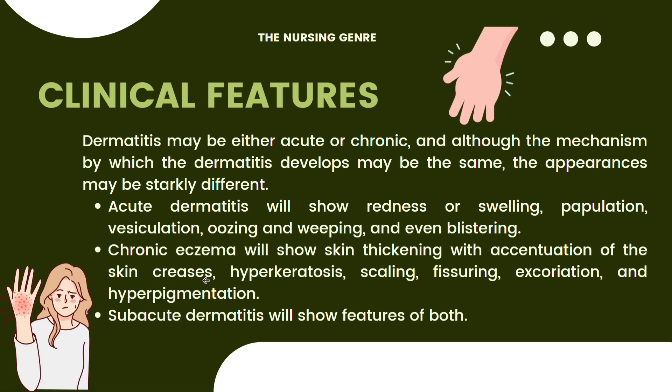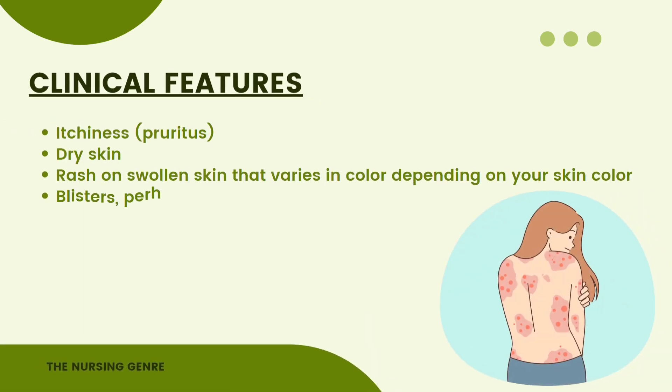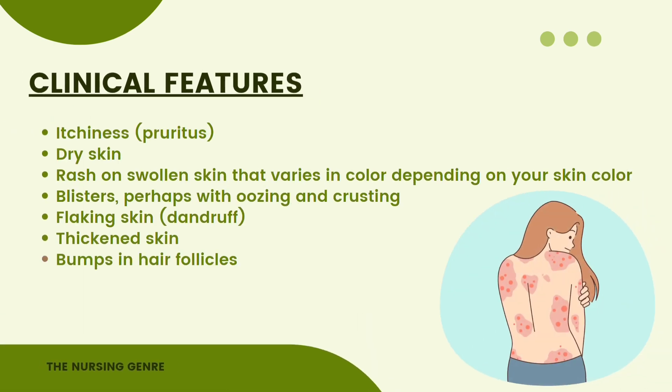Subacute dermatitis shows features of both acute and chronic forms. Clinical features overall include itchiness, dry skin, rash, and swollen skin that varies depending on skin color. There may also be blisters, oozing and crusting, flaky skin like dandruff, and thick skin around hair follicles.